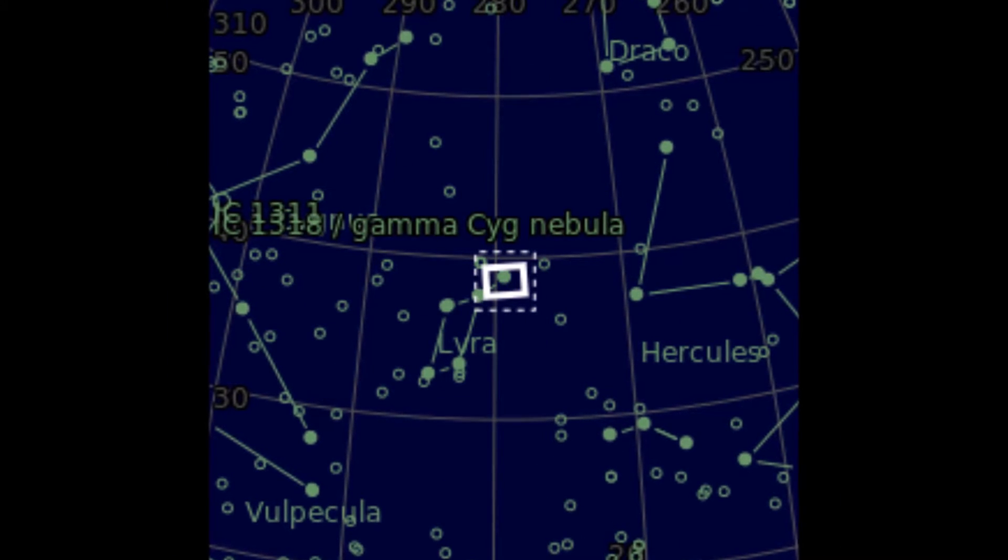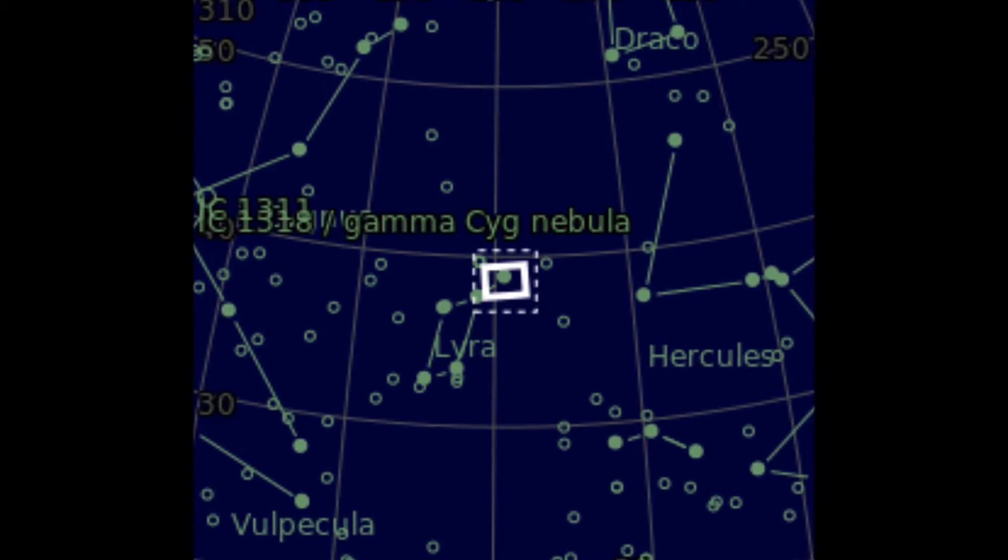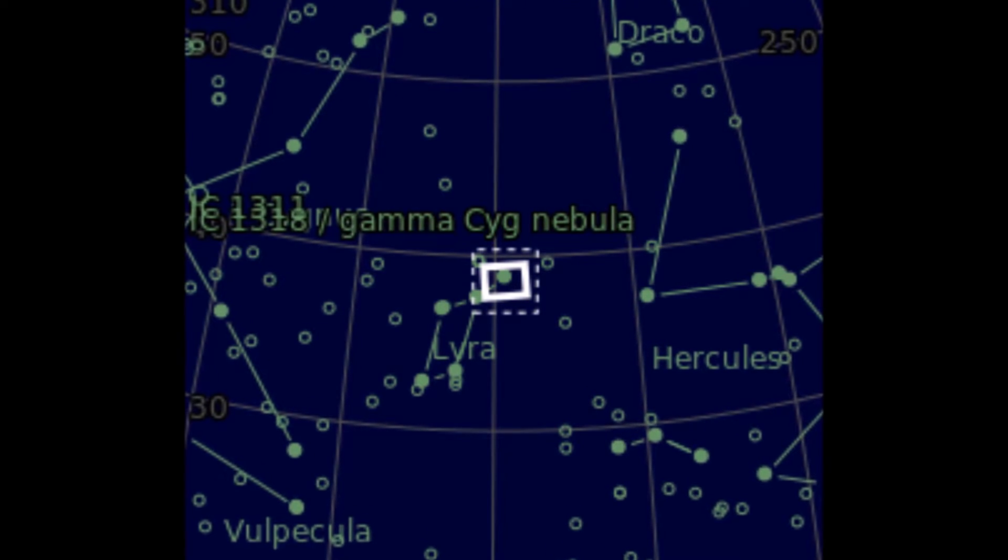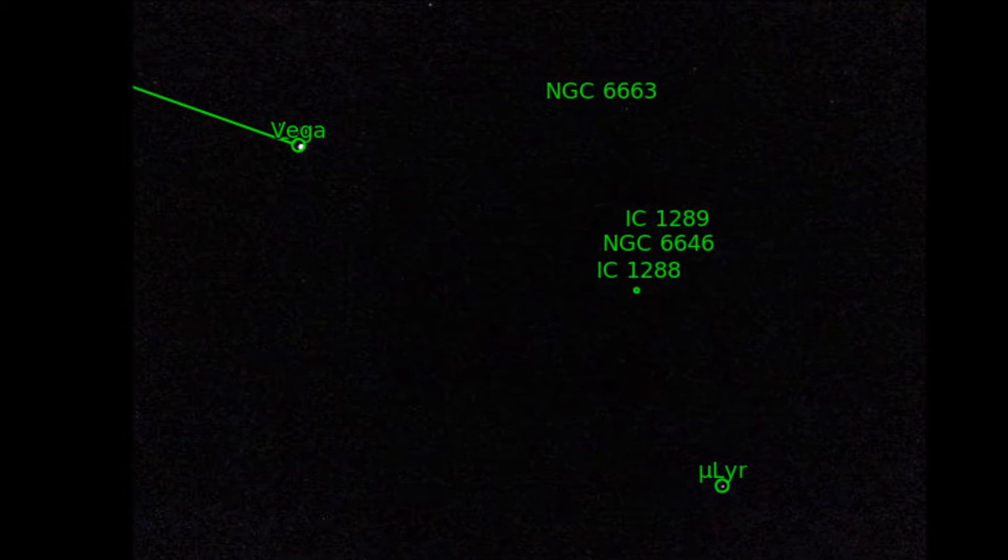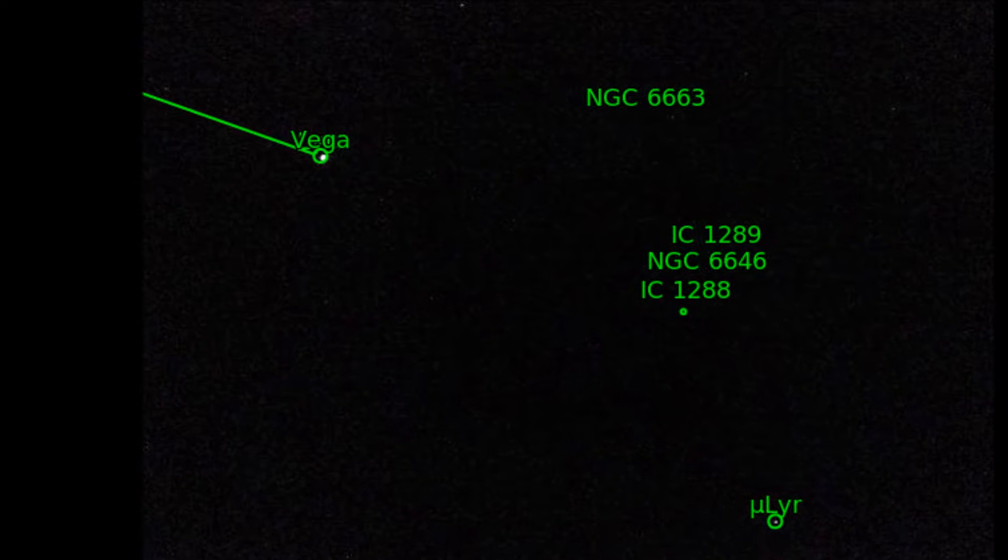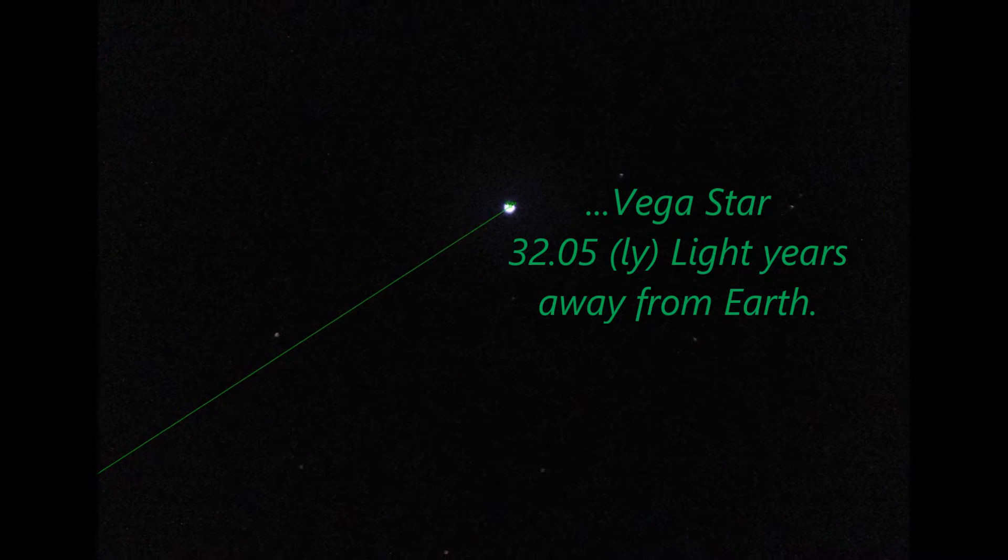Beginning at the north, Lyra is bordered by the constellations of Draco, Hercules, Vulpecula, and Cygnus. Lyra is visible from the northern hemisphere from spring through autumn and nearly overhead in temperate latitudes during the summer months.